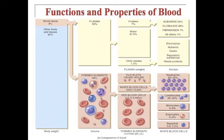White blood cells can be further broken down as follows: neutrophils make up about 60 to 70% of white blood cells, lymphocytes 20 to 25%, monocytes 3 to 8%, eosinophils 2 to 4%, and basophils about 0.5 to 1% of the white blood cells in whole blood.